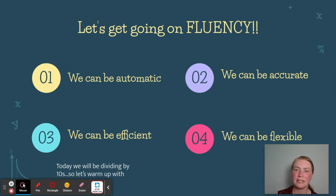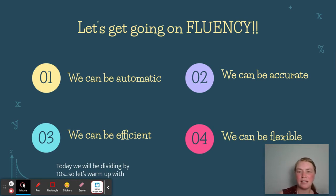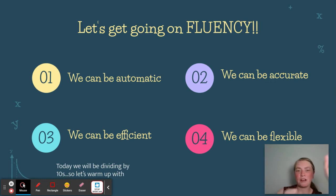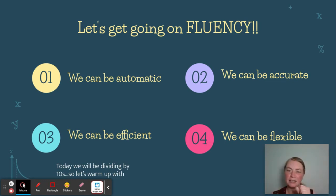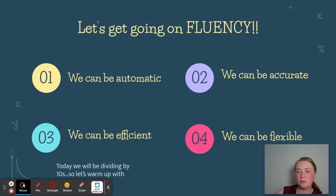Let's start at zero and get up to two hundred. Today I'm going to ask you to do a little dancing, a little clapping, or a little punching, just to make it a little fun. So here we go: zero, ten, twenty, thirty, forty, fifty, sixty, seventy, eighty, ninety, one hundred, one ten, one twenty, one thirty, one forty, one fifty, one sixty, one seventy, one eighty, one ninety, two hundred.